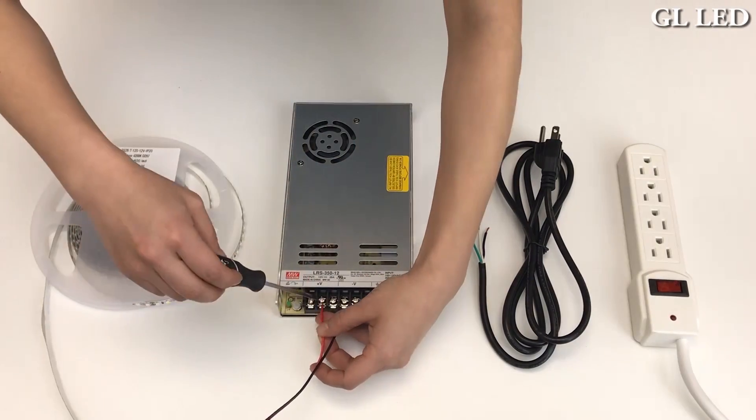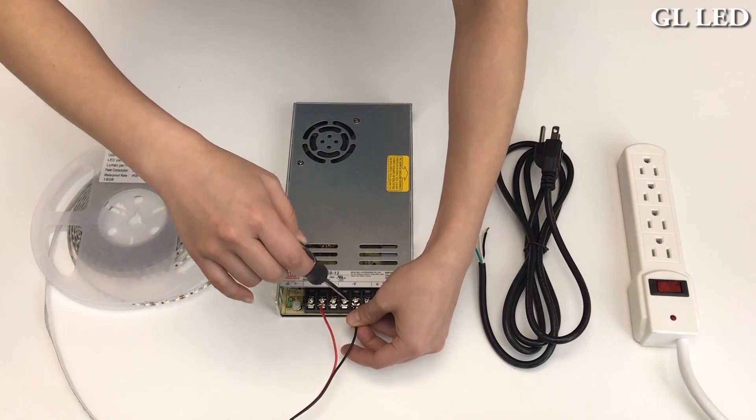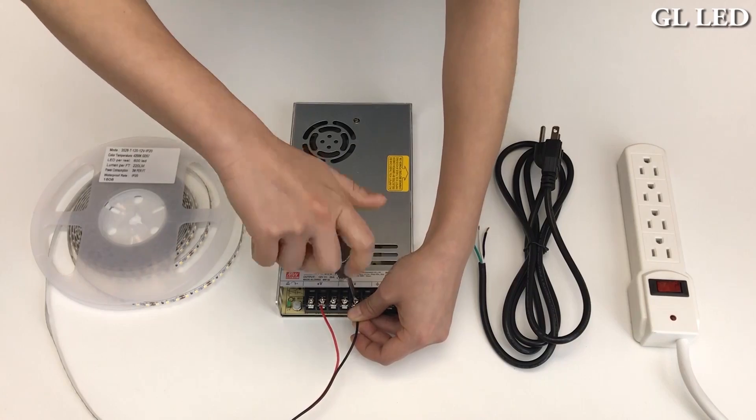Your strip light with the red wire will go into your output positive section. The black wire will go into your output negative section.